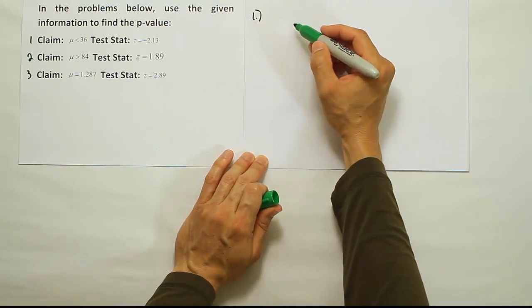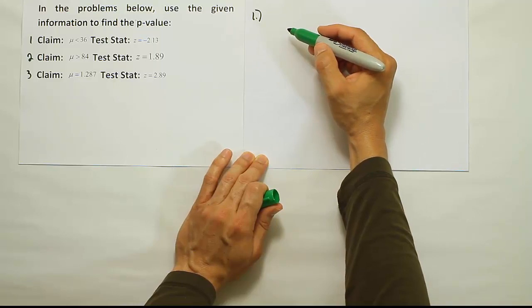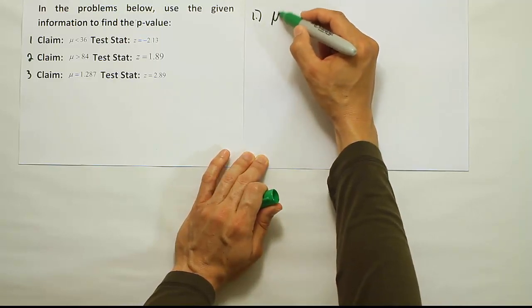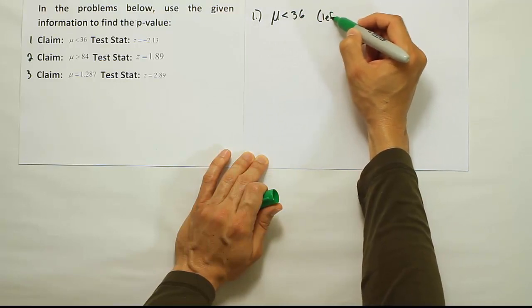First thing we ought to do is determine if it's a left-tailed test, right-tailed test, or two-tailed test. When I look at that claim, I see that it says the mean is less than 36, so that tells me it's a left-tailed test.